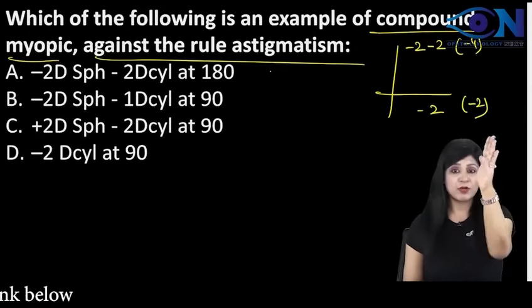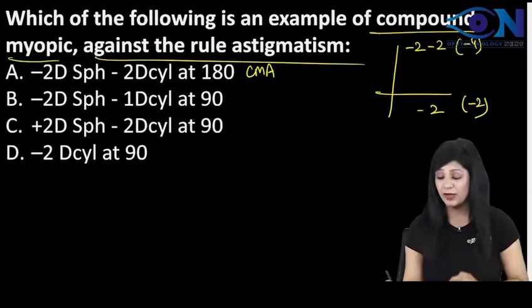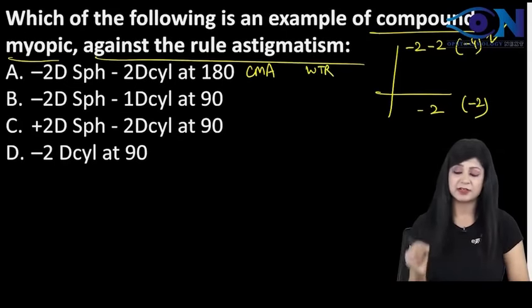So minus 4 here also and minus 2 here also. So this is a compound myopic astigmatism and you know minus 4 is more therefore it is with the rule astigmatism.